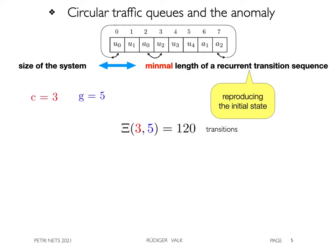In case of three cars and five co-cars, we obtain a length of 120 transitions. But increasing one of the parameters from 5 to 6, we obtain only 54 transitions.